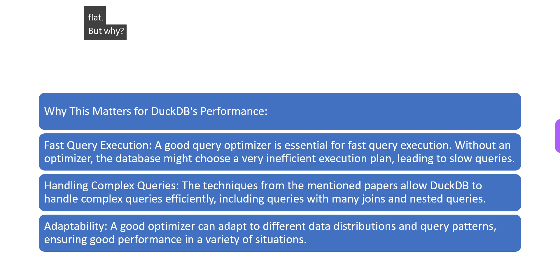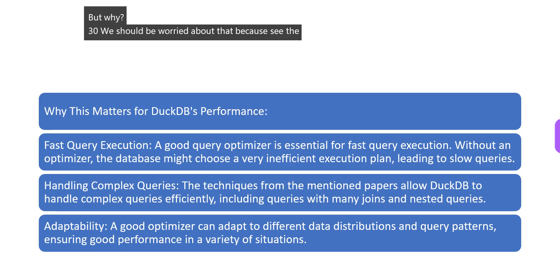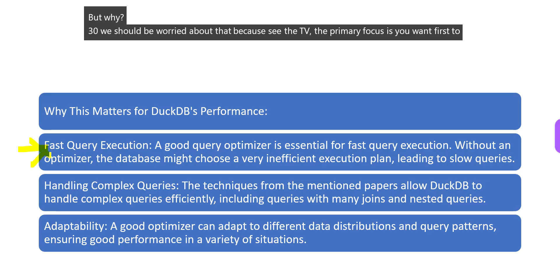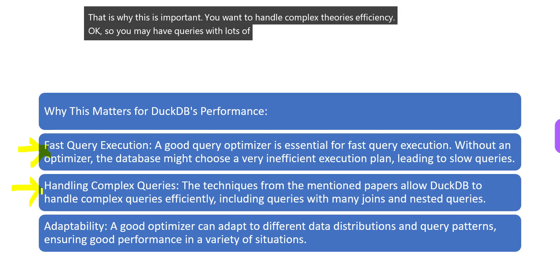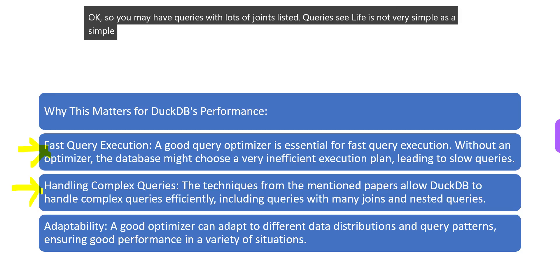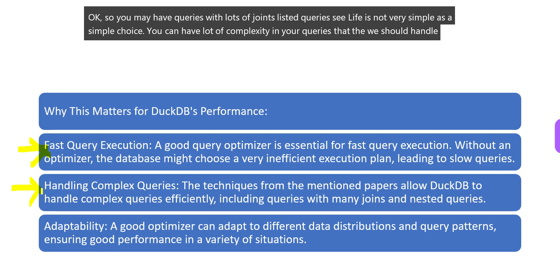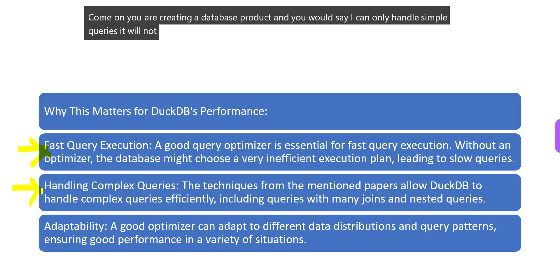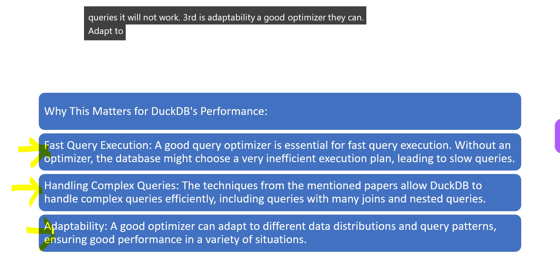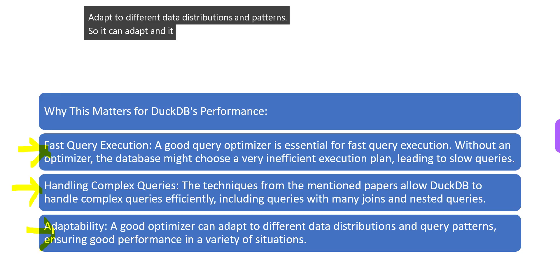But why should DuckDB be worried about that? Because DuckDB's primary focus is fast query execution. You want to handle complex queries efficiently. You may have queries with lots of joins and nested queries — life is not as simple as a simple join. You can have a lot of complexity in your queries, and DuckDB should handle it. Third is adaptability — a good optimizer can adapt to different data distributions and patterns and look for better performance in any situation.